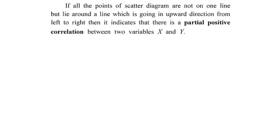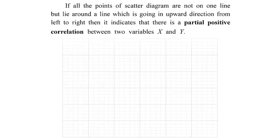When points of a scatter diagram are not on a single line but are somewhat scattered, and if we can draw an imaginary straight line from left bottom to right top through them, we call this a partial positive correlation. The points are scattered, not on a single line, but the imaginary line trends positively.